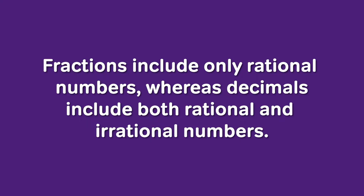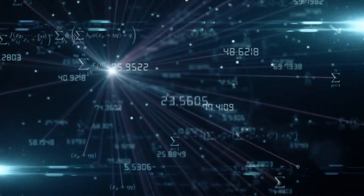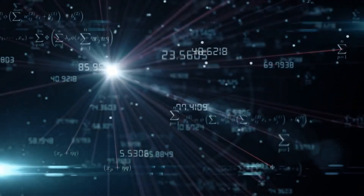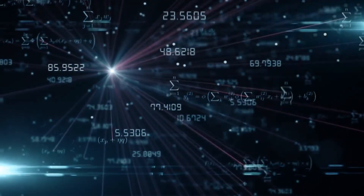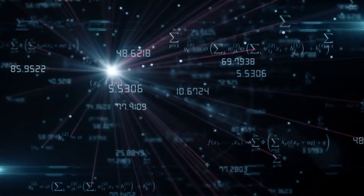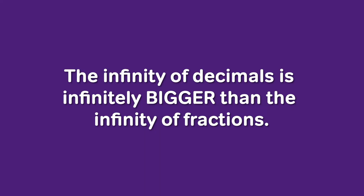Technically, fractions and decimals don't cover exactly the same territory: fractions include only rational numbers, whereas decimals include both rational and irrational numbers — an infinitely bigger set. So even though there's an infinity of fractions between 0 and 1 and an infinity of decimals between 0 and 1, the infinity of decimals is infinitely bigger than the infinity of fractions — one of the many mind-boggling things about the continuous infinity of the real number line. Irrational numbers include roots, which the GMAT loves to test.